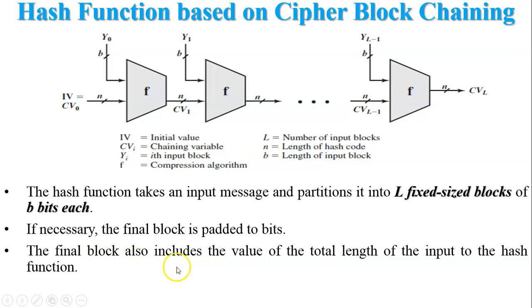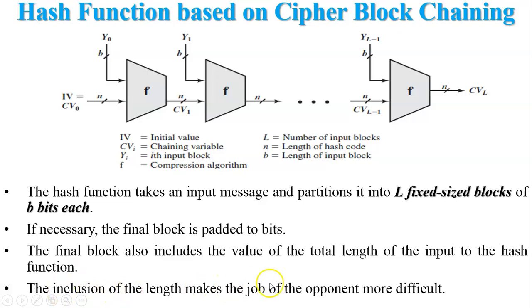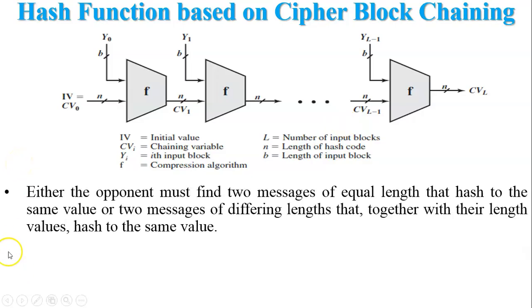The final block also includes the value of the total length of the input to the hash function, because the inclusion of the length makes the job of the opponent more difficult — it increases the complexity of the hash function. The opponent must either find two messages of equal length that hash to the same value, or two messages of differing length that together with the length values hash to the same value. No one can retrieve the message from the given hash value; everybody can generate a hash value from a given message.